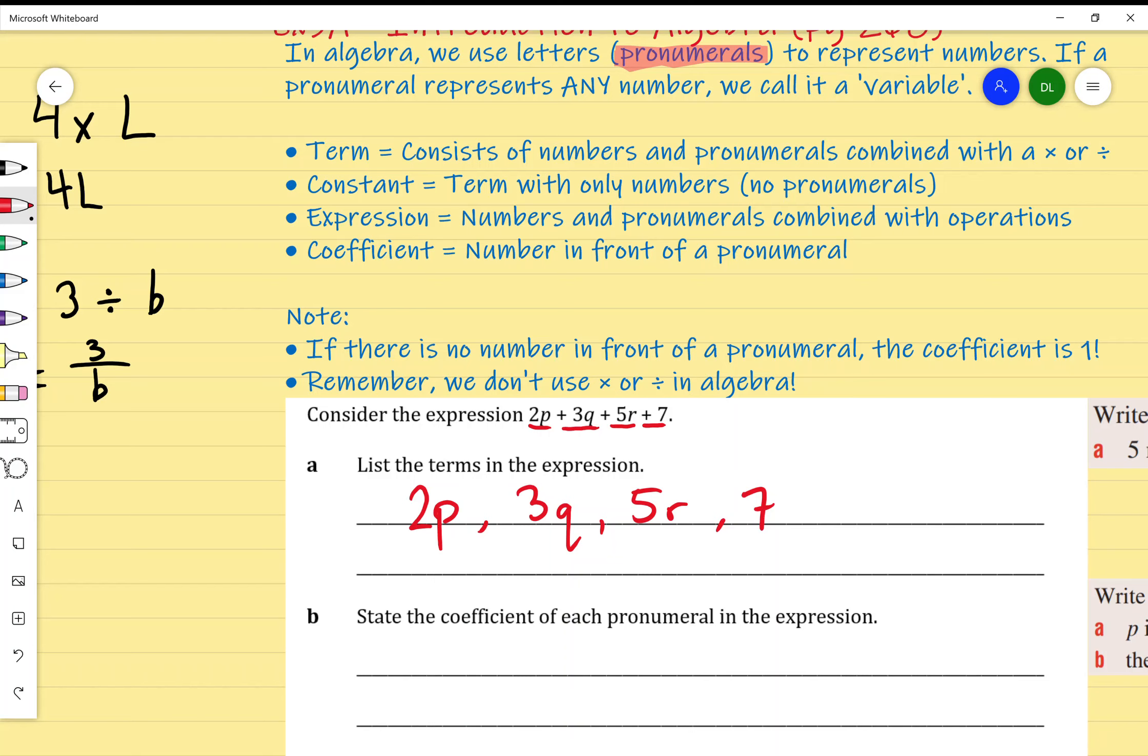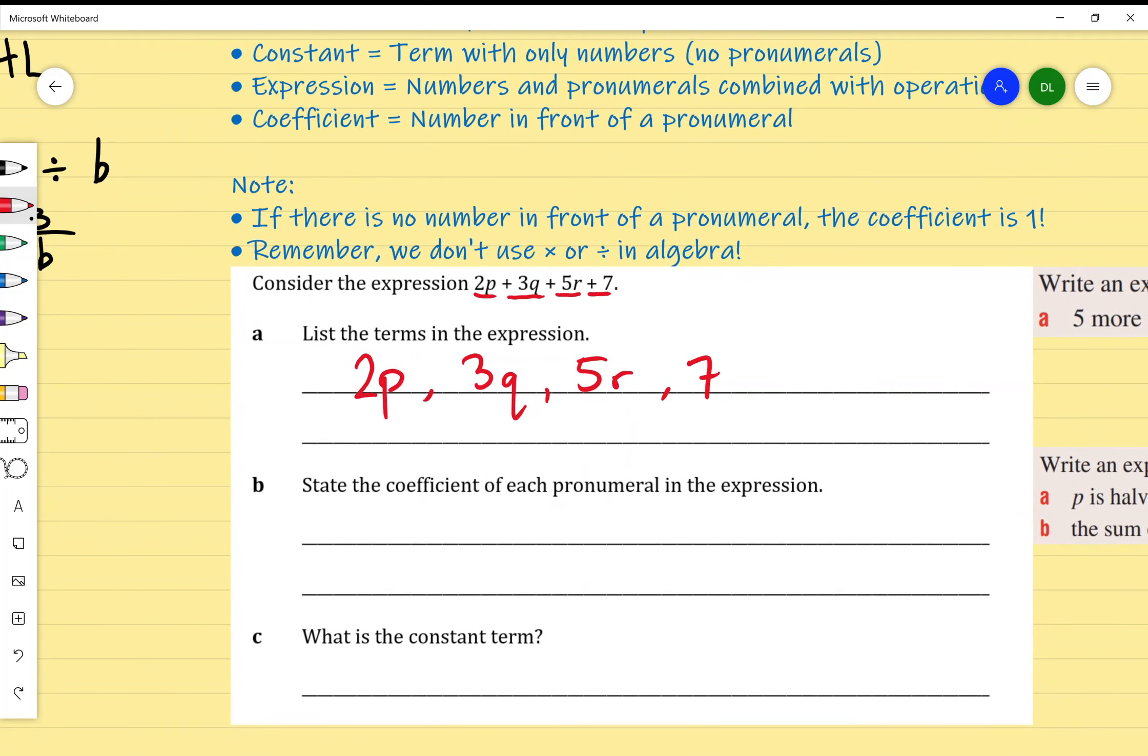The next thing is the constant. A constant is a term with only numbers and no pronumerals. We've got four different terms identified. There's a P in the first one, a Q in the second, and an R in the third. The last term, 7, doesn't have any pronumerals, it's just a number. So the constant in this expression is 7. There's not always going to be a constant, but in this situation the constant is 7, which answers part C.